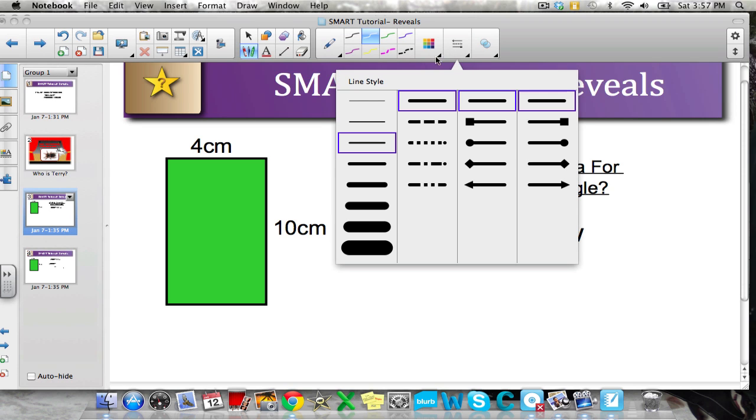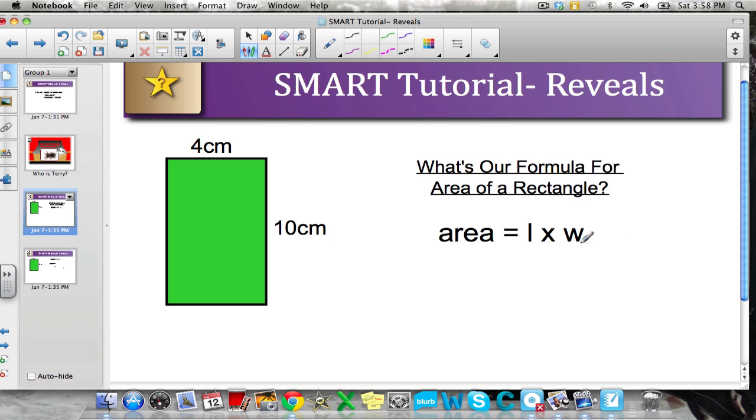What you also might want to do here is go into your line style and put it to one of the larger sizes, because what we're going to be doing is effectively coloring over top of that area that we don't want to be revealed until we're ready for it.